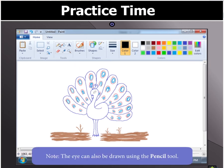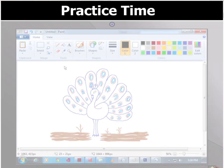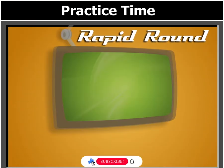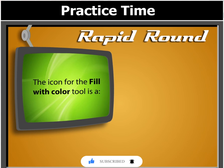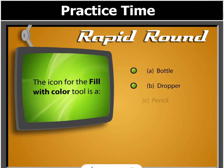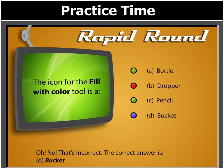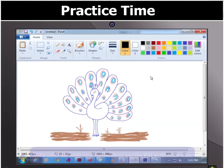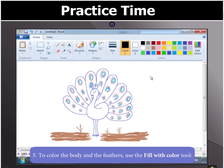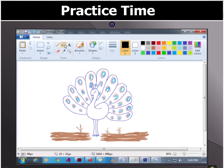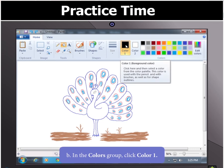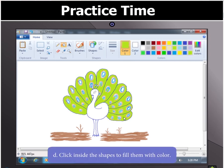Children, you can also use the Pencil tool to draw the eye. Before we go further, let's answer this question: the icon for the Fill With Color tool is — ? To color the body and feathers, click on the Fill With Color tool in the Tools group, then select Color 1 in the color group and select the colors needed one by one. Click inside the shapes to fill them with color.